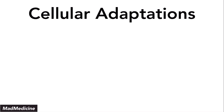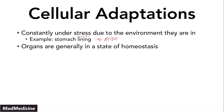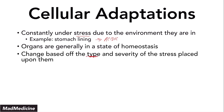If you haven't seen our previous video, we talked about cellular adaptations — mainly the fact that your cells are constantly under a lot of stress, mainly because of the environment that they're in. One example of this would be the stomach lining, which is a very harmful and acidic environment, making it hard for cells to survive. At the cellular level, even though they're constantly being stressed, our organs are generally under a state of homeostasis. These things can change based on the type and severity of the stress placed upon them.